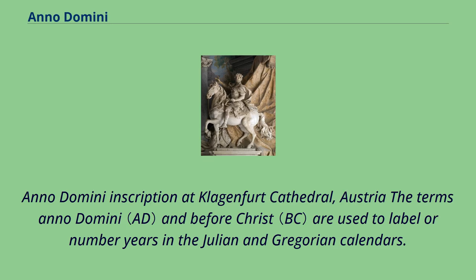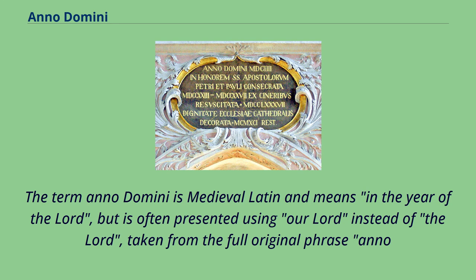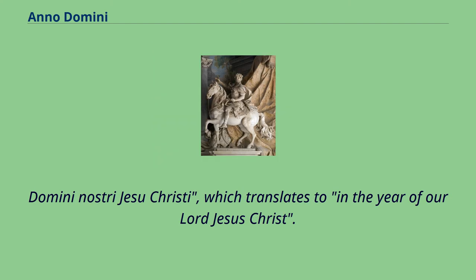Anno Domini inscription at Klagenfurt Cathedral, Austria. The terms Anno Domini and Before Christ are used to label or number years in the Julian and Gregorian calendars. The term Anno Domini is medieval Latin and means 'in the year of the Lord,' but is often presented using 'our Lord' instead of 'the Lord,' taken from the full original phrase Anno Domini Nostri Jesu Christi, which translates to 'in the year of our Lord Jesus Christ.'